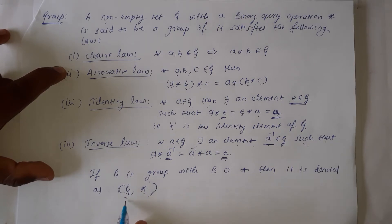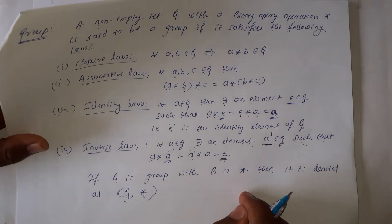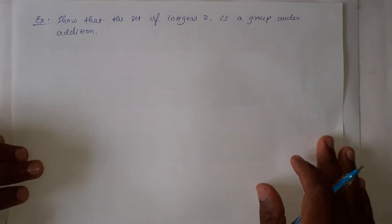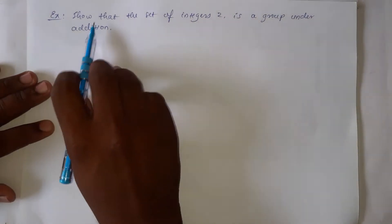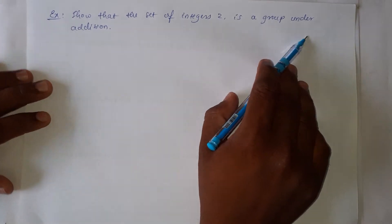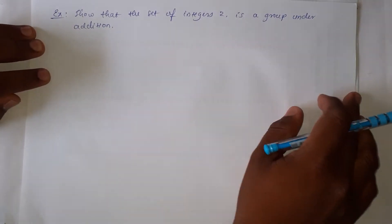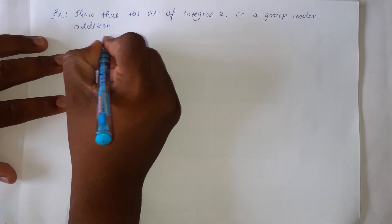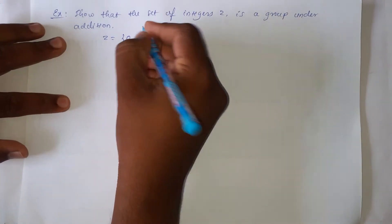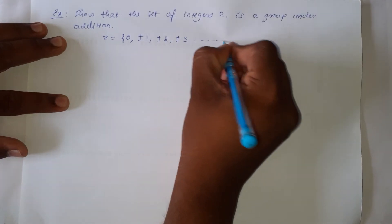This is the symbolic representation for a group along with the binary operation star. Now let us discuss some examples on groups. The first example: show that the set of integers Z is a group under addition. We know the set of integers Z equals {0, ±1, ±2, ±3, ...}.